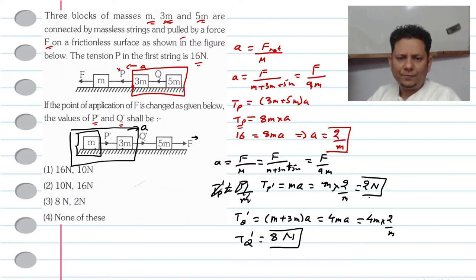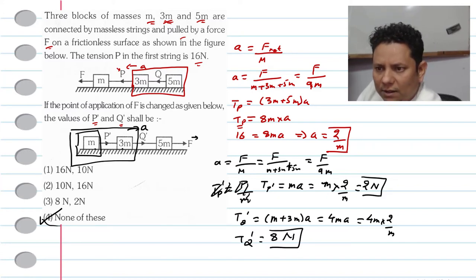So the tensions are 2N and 8N. Looking at the options, there is no 2 or 8. So we can confidently say that option number 4, none of these, would be the right answer for this problem.